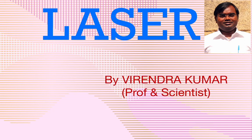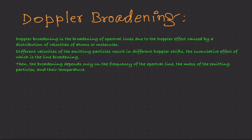In a gas, atoms move in a random fashion. When a moving atom interacts with electromagnetic radiation, the apparent frequency of the wave is not the same, but it becomes different from that seen from a stationary atom. This is called the Doppler effect, and the broadening caused by this is termed as the Doppler broadening. Basically, the Doppler broadening is the broadening of spectral lines due to the Doppler effect caused by the distribution of velocities of atoms or molecules.